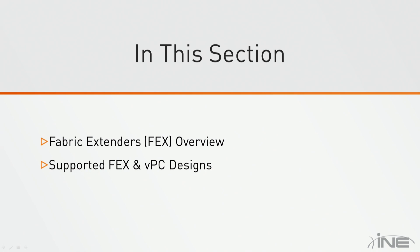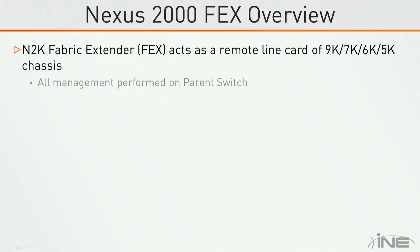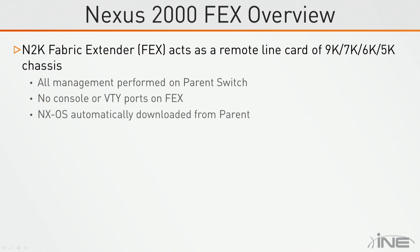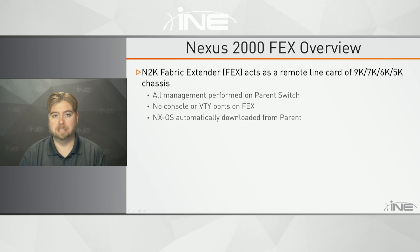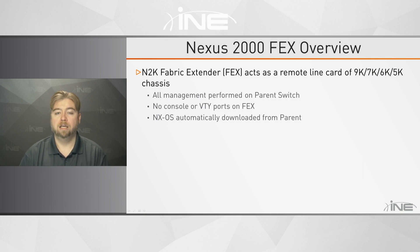As we talked about briefly in our hardware overview section, the fabric extenders are the Nexus 2000 series switches. They're considered to be remote line cards of the parent switch — the parent switch being the Nexus 5000, 6000, 7000, or 9000. That parent switch provides the management interface, control plane, and data plane centralization for any connected fabric extenders.